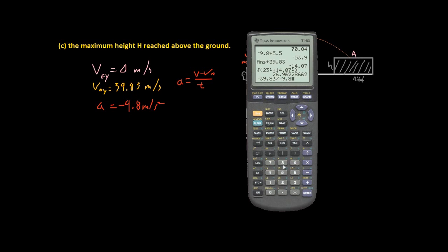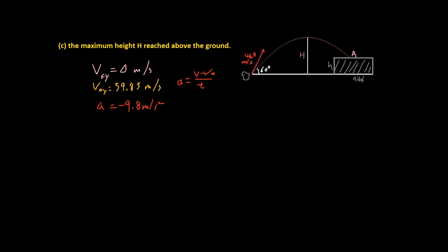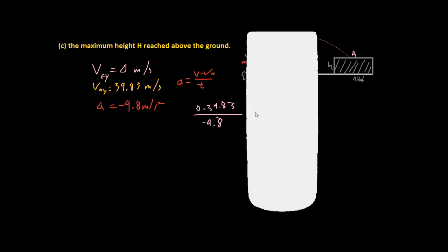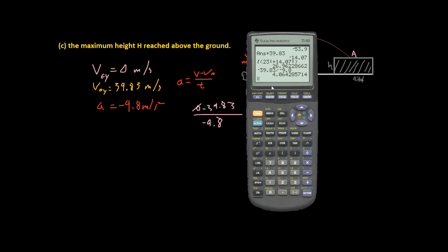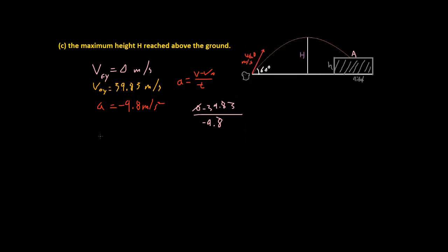Let me actually write that down. Since v_final is zero, it's going to be zero minus 39.83. Then I switch t and a — multiply t on each side and divide a by each side — and you get negative 9.8 here. You just divide, the zero cancels out, and you get 4.066. So t is equal to 4.066 seconds.